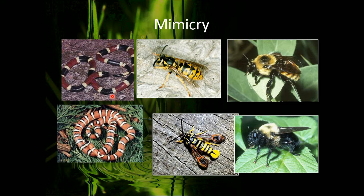Here are some examples of mimicry. The coral snake is very venomous, and the kingsnake mimics it. When placed next to each other, if you were to encounter one of these snakes in the woods, would you be 100% confident whether it was the venomous coral snake or the non-venomous kingsnake? Many insects have black and yellow striping when they have a stinger, but sometimes beetles or flies will mimic them to look like they have a stinger when they actually don't.